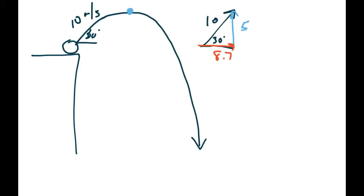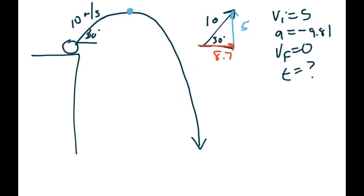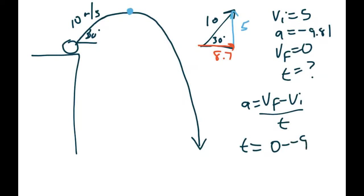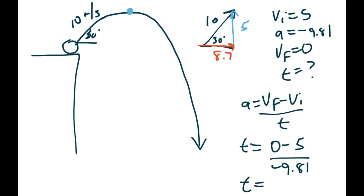Now we calculate the time to reach the peak. We have initial velocity = 5 (vertical), final velocity at the peak = 0, and acceleration = −9.81. We don't have distance, so we use a = (VF − VI)/T. Rearranging: T = (0 − 5) / (−9.81), which gives a time of about 0.5 seconds to get from the launch point to the peak.